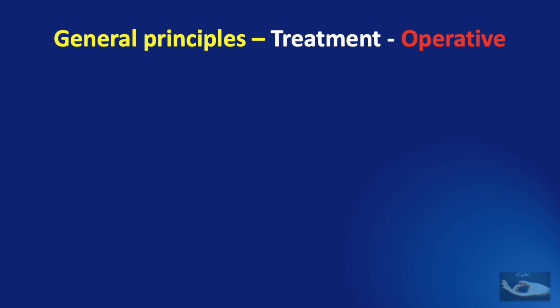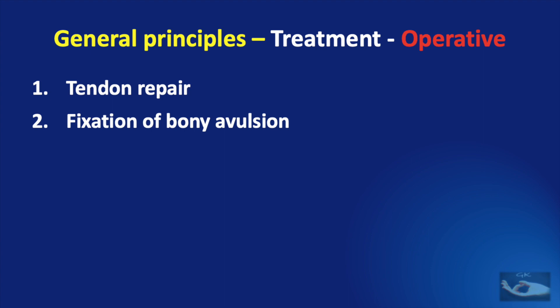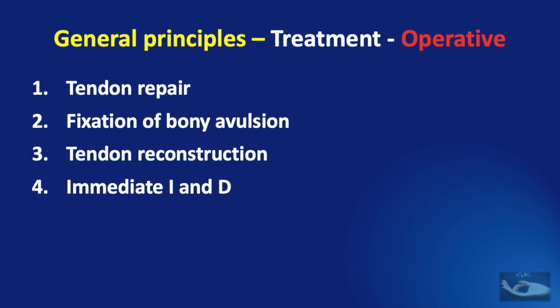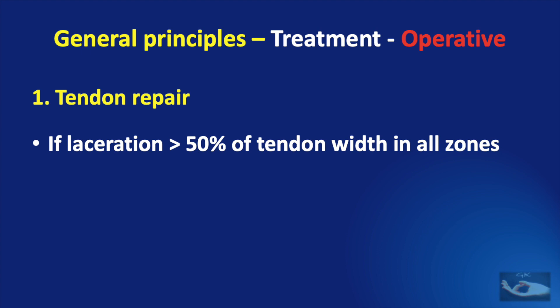When it comes to operative management, there are 6 procedures commonly done: tendon repair, fixation of bony avulsion, tendon reconstruction, immediate incision and drainage or secondary suturing, central slip reconstruction, and tendon transfer. The most commonly done procedure is tendon repair, which is indicated if the laceration of the extensor tendon is more than 50% of the tendon width in all zones. Fixation of bony avulsion is indicated for bony mallet finger with dislocation of the terminal phalanx.